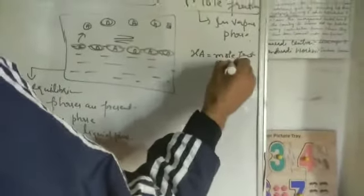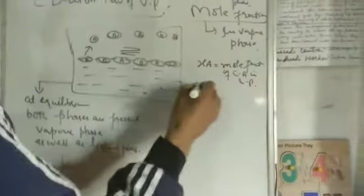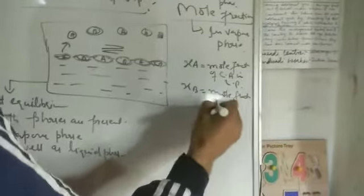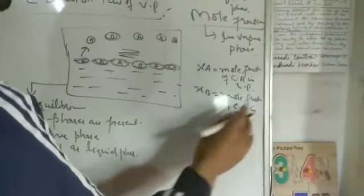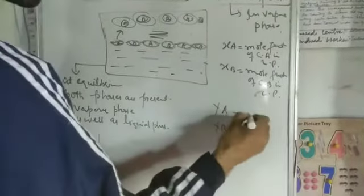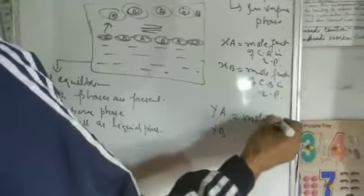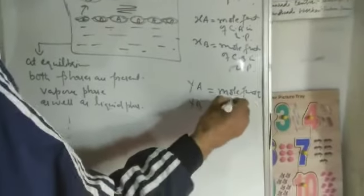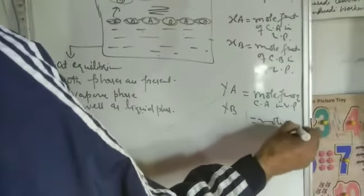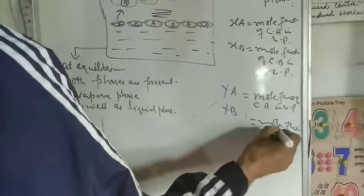XA is mole fraction of component A in liquid phase, XB is mole fraction of component B in liquid phase. YA is mole fraction of component A in vapor phase, and YB is mole fraction of component B in vapor phase.